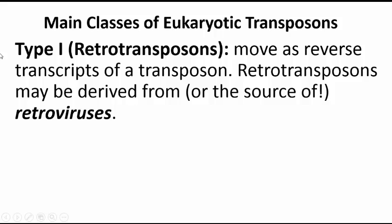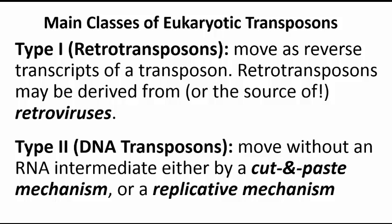As we turn to a description of eukaryotic transposons, watch for similarities to the prokaryotic transposons — IS and TN elements, etc. Type 1 transposons, or retrotransposons, move or jump by transcription of RNA at one locus, followed by reverse transcription and integration of the cDNA into DNA regions at different locations. Retrotransposons may be derived from or even the source of retroviruses, which also excise from and integrate into DNA. Type 2 transposons are DNA transposons. These move by one of two mechanisms: either cut and paste or replication. Cut and paste transposons move by leaving one locus and integrating into another, while transposons that move by a replicative mechanism are copied and the copies integrate into new target site DNA, leaving the original transposon in place. Mu is an example of a replicative type 2 transposon in a prokaryote.